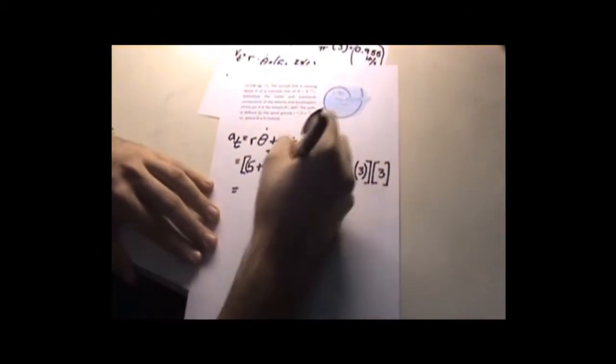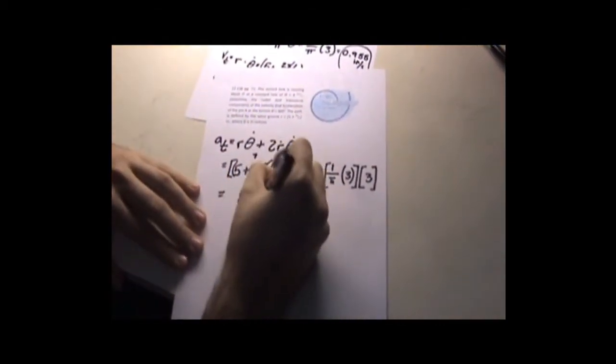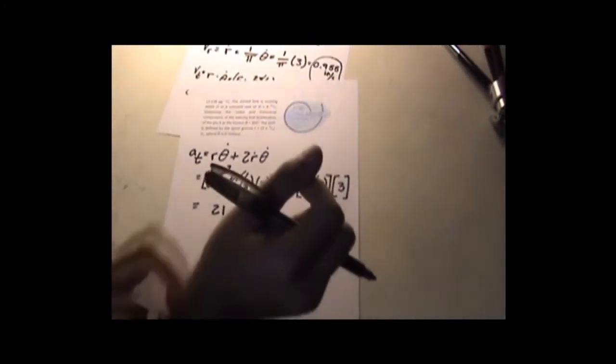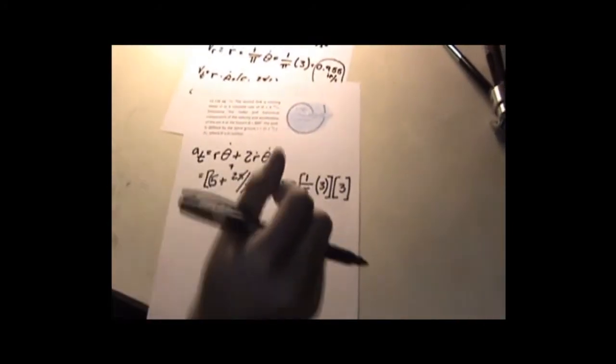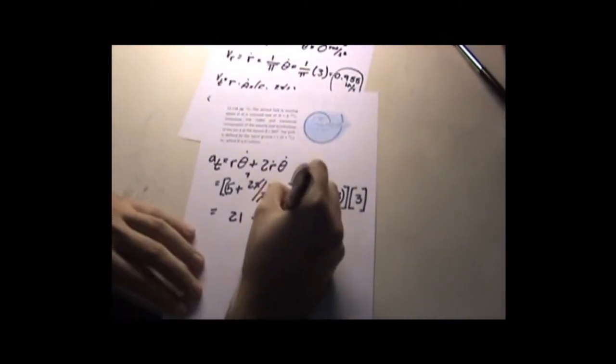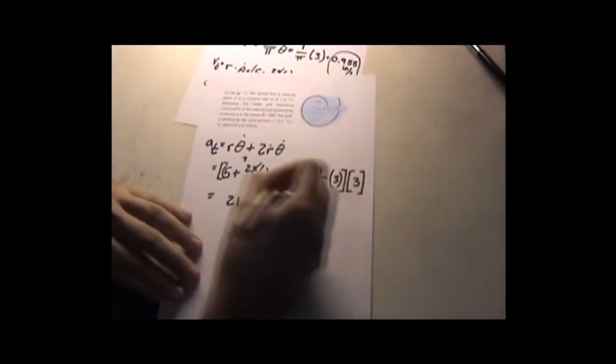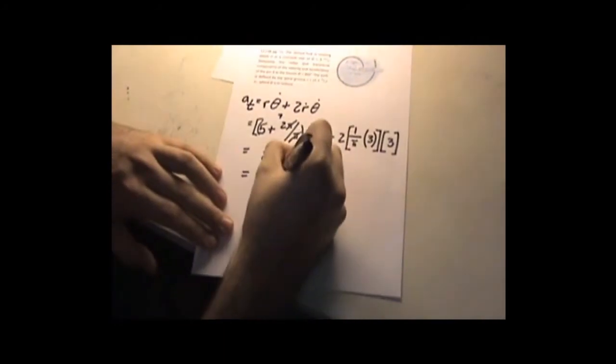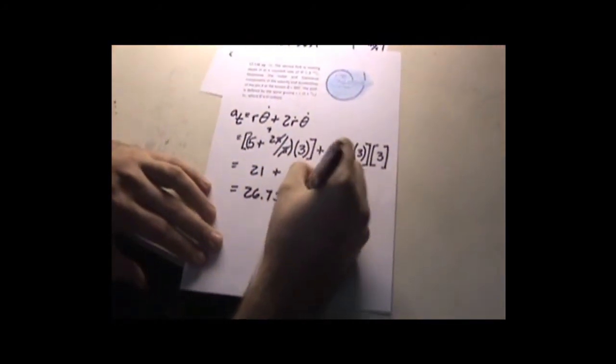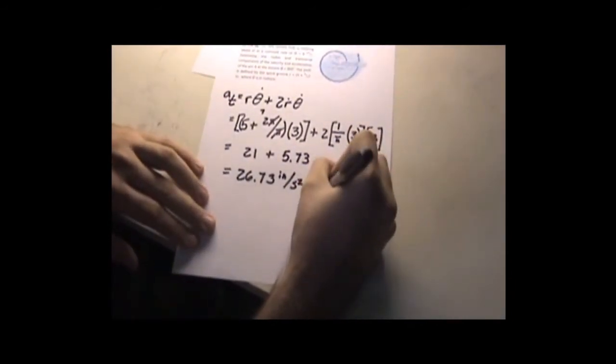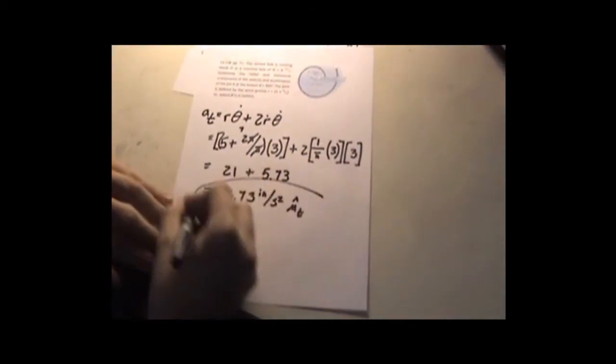That goes to 7 times 3. That's 21 plus 9 times 2 is 18, 18 over π. 5.73. So, your final answer is 26.73 inches per second squared in the tangential unit vector direction.